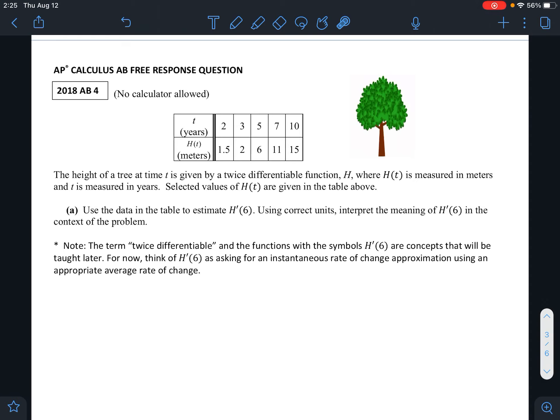Basically, all we need to think about is what does h'(6) mean - it's asking for an instantaneous rate of change. It's asking for a velocity or something at a point. But we can't do that right now, but what we can do again is find an average rate of change to guess.